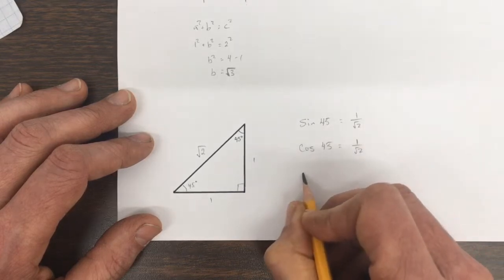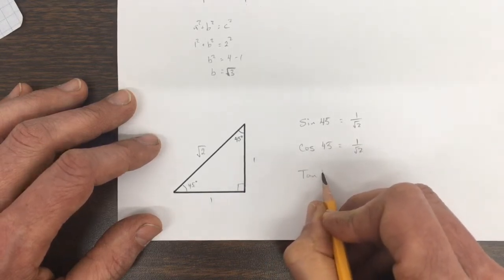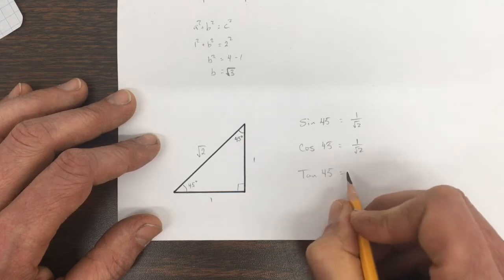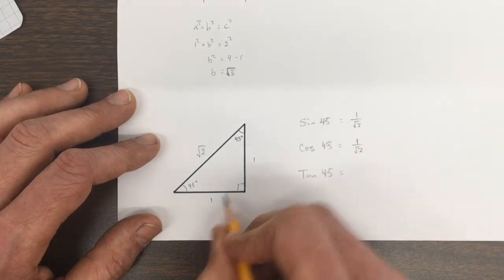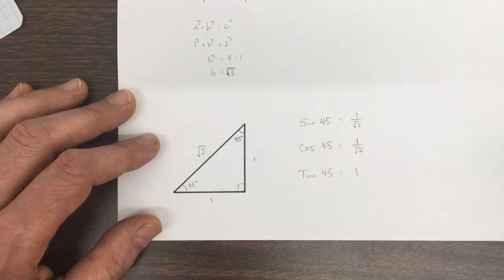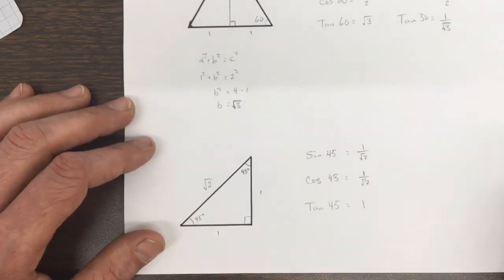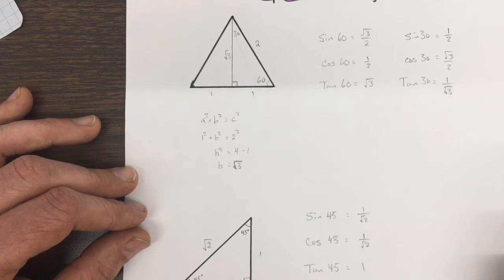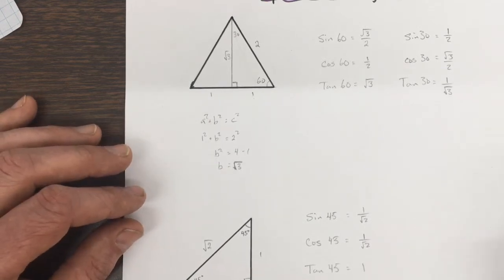And the tan of 45 is equal to 1 over 1, which is 1. So those are the special triangles and their trig relations, and that's it.